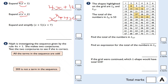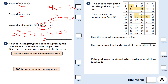Expand and simplify this double bracket using the FOIL method — first, outer, inner, last. x times x is x squared; x times positive 7 is positive 7x; 5 times x is 5x; 5 times positive 7 is positive 35. Collecting like terms: 7x plus 5x is 12x, so the final answer is x squared plus 12x plus 35.